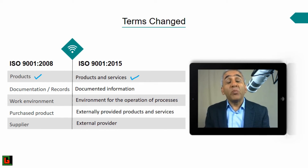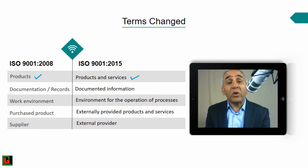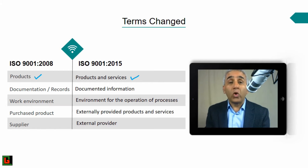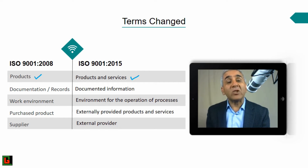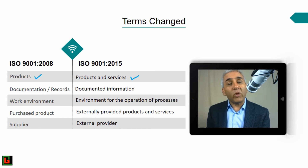This change was made to clarify that the 9001 standard is not limited to production — it is equally applicable to production and services. Even in the 2008 version, when the term 'product' was used, there was a note stating it meant product or service. But in 2015, this has been clearly established throughout the standard, so wherever 'product' appeared, it is now 'products and services.'